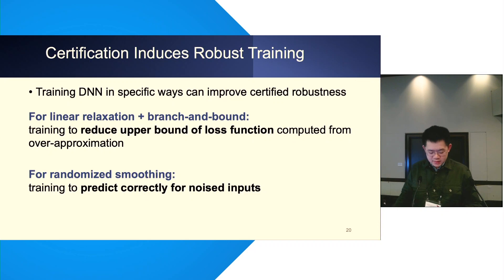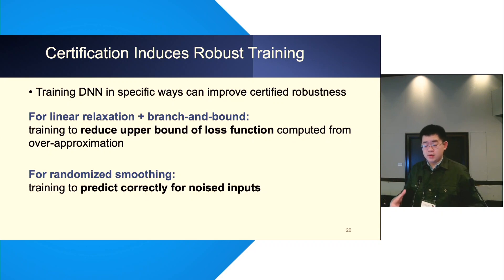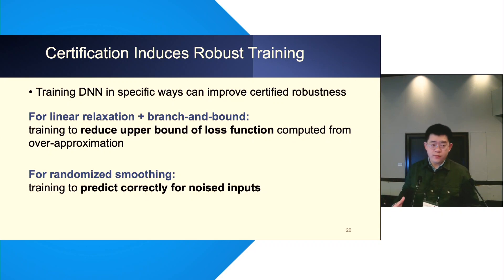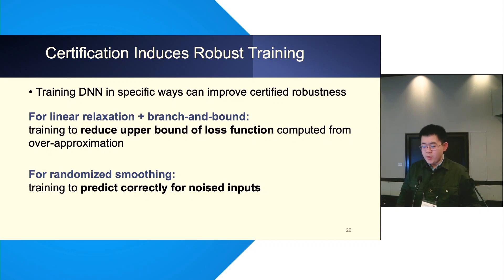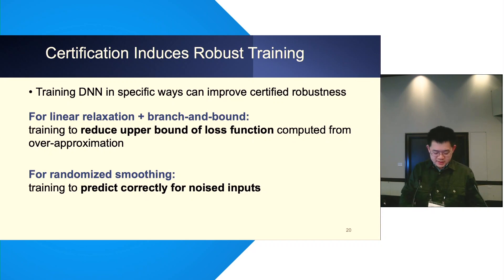With these two main threads of certification — linear relaxation and randomized smoothing — another way to further improve certified robustness is to combine them with effective training approaches. For linear relaxation combined with branch and bound, we can reduce the upper bound of the loss function during training. For randomized smoothing, we can train the model to predict correctly for noisy inputs.